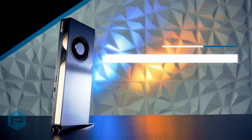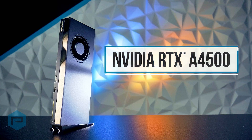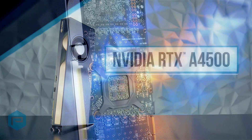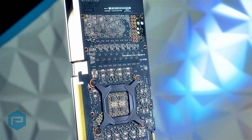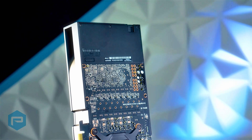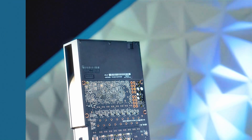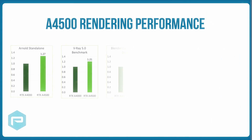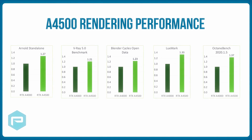For GPU-accelerated rendering tasks, let's focus on the RTX 8400 with additional RT cores, more GPU memory, and memory bandwidth, which provides faster rendering performance. Here we see the performance of the RTX 8400 compared to the RTX 8400 for several of the more popular third-party rendering applications.